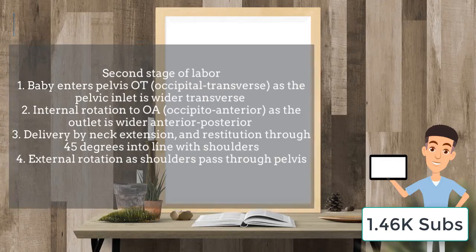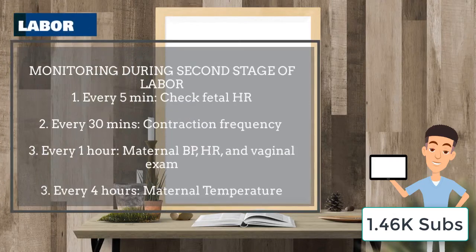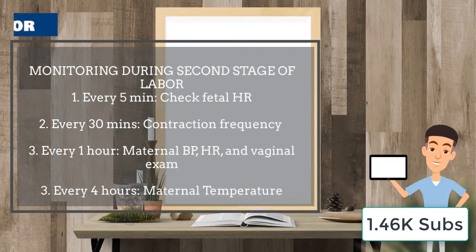Monitoring during the second stage of labor can be done every five minutes to check the fetal heart rate, every 30 minutes to check contraction frequency, every one hour to check the maternal blood pressure, heart rate, and vaginal examination, and every four hours to check the maternal temperature.